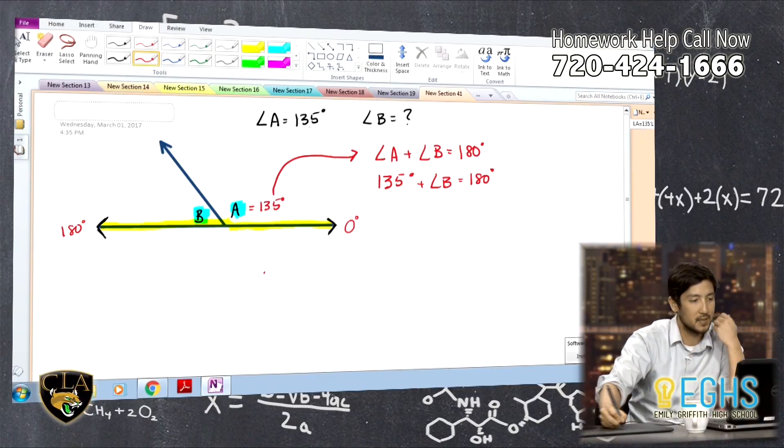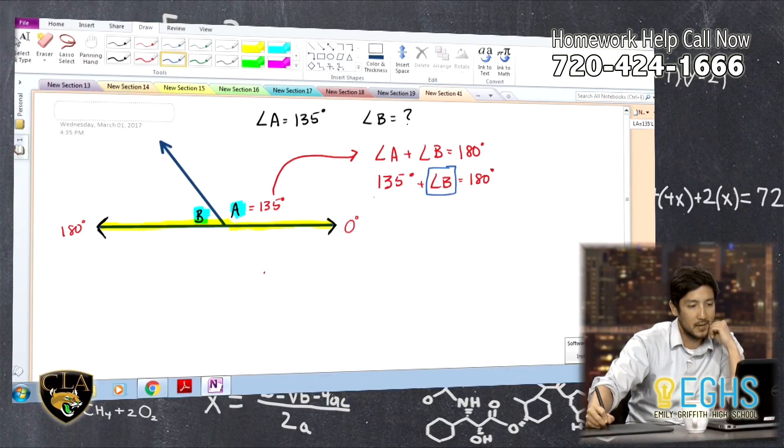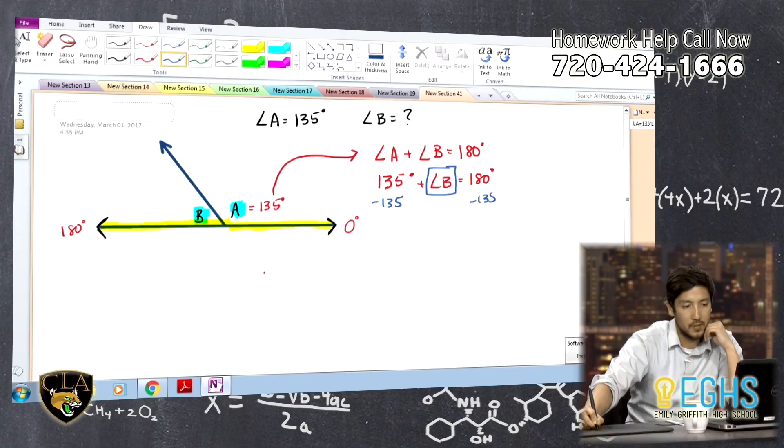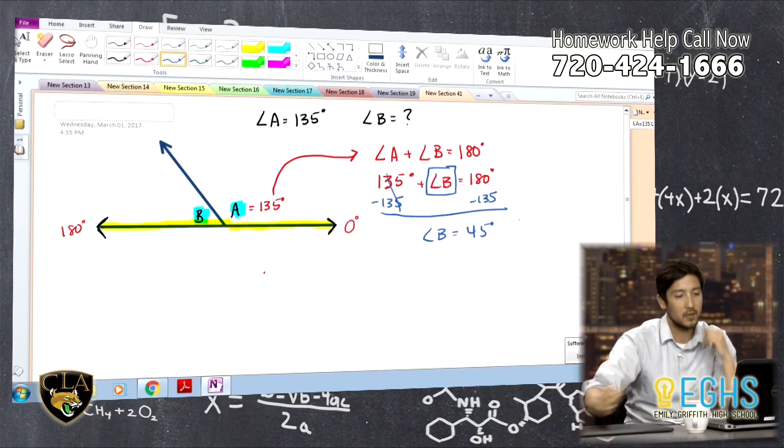And then from there, we're just going to solve algebraically. Basically, we're going to treat this angle B right here as a variable because it is. So we're going to subtract 135 degrees from both sides. And these cancel out and we end up with angle B equals 45 degrees.